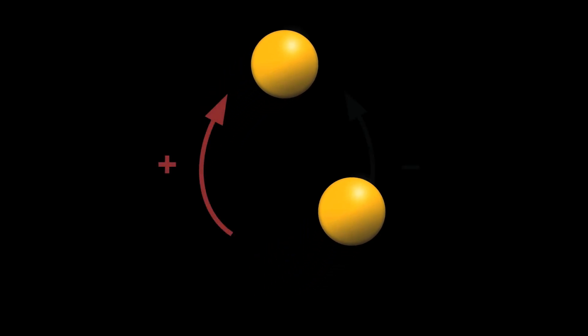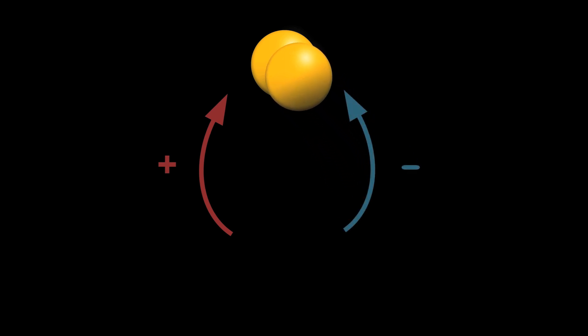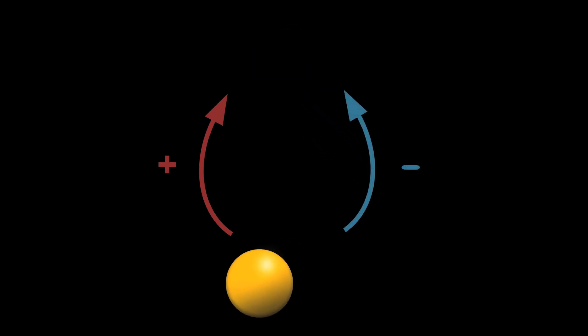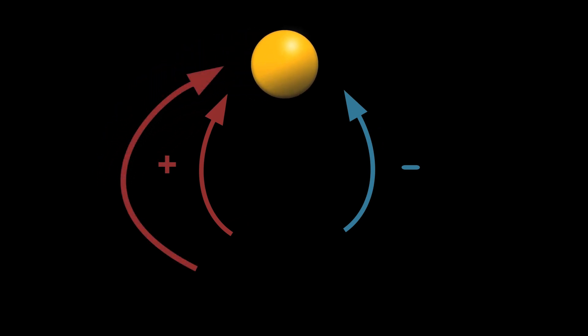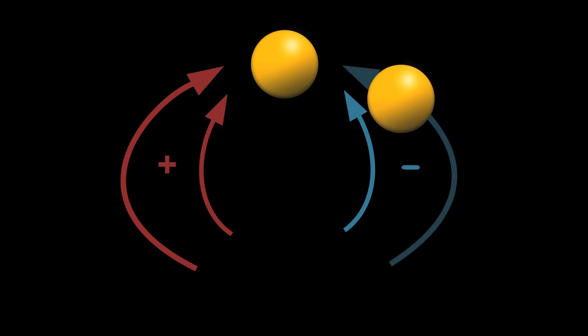the different places where the particle could be, or the different paths that it could take to reach a certain final position, can all interfere with each other. And if this happens, then these different paths can cancel each other out. If some are positive and others are negative, then you won't find the particle at that final place at all.